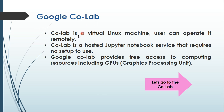Google Colab is a virtual Linux machine that the user can operate remotely. Colab is a hosted Jupyter notebook service that requires no setup to use, meaning we do not need to install various packages such as OpenCV, Keras, etc. Old computers don't have graphic cards, making it time-consuming to run deep learning algorithms. Google Colab provides free access to computing resources including GPUs, which is a great advantage. You only need a Gmail account to use Google Colaboratory.